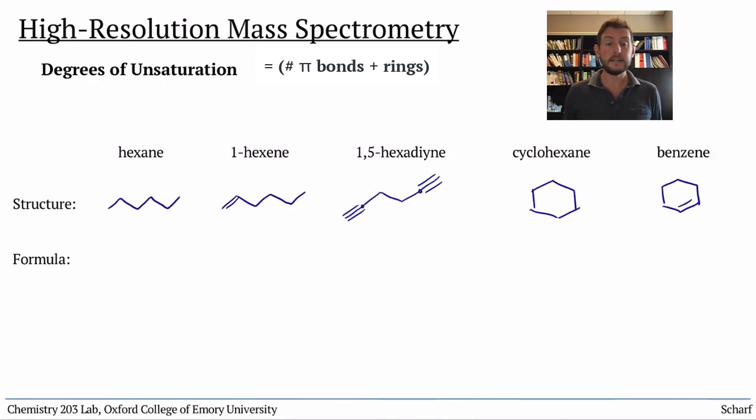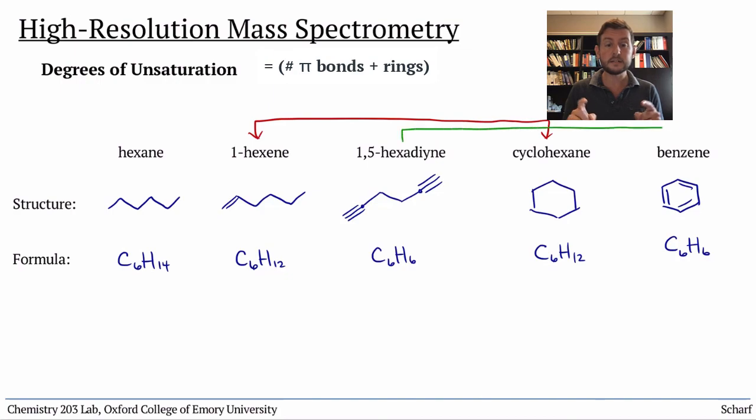Hexane is C6H14. 1-hexene is C6H12. 1,5-hexadiene is C6H10. Cyclohexane is C6H12. And benzene is C6H6. These pairs are constitutional isomers of one another.